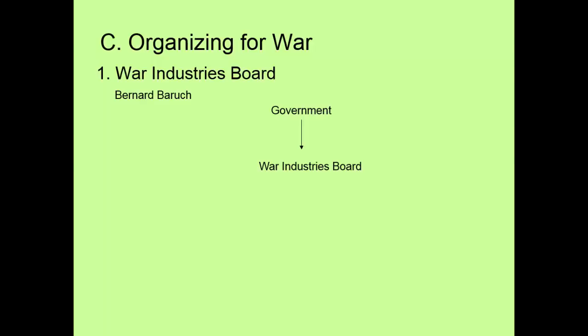We're going to continue working on the World War I notes. This is part two. Today's notes are going to be focusing mostly on the home front during World War I — what is going on in America, how we're going to pay for the war, and how the war impacts America here at home. Letter C: organizing for war.